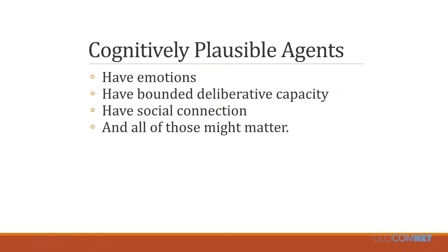That gives no account of how the position could actually arise in a distributed population of cognitively plausible creatures. Agent-based computational modeling is a central tool in producing explanations of that sort. Cognitively plausible agents have emotions, bounded deliberative capacity, and social connection — all of which might matter at the individual or collective level.